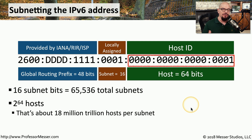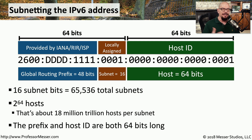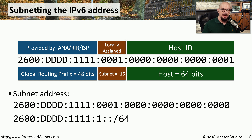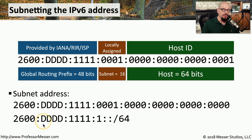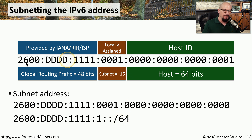And if you wanted to subnet further, you could. But we have so many subnets and host addresses available that it's very common to have your network or prefix as 64 bits and keep the last 64 bits for your host addresses. If we were to write out the subnet address for this network, it would be 2600:DDDD:DDDD:1111:0001 with the rest as zeros. To create the compressed version of that subnet address, you would use CIDR block notation: 2600:DDDD:1111:1::/64. That slash 64 designates the 64 bits for your subnet mask, leaving the 64 bits for the host ID.